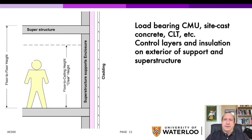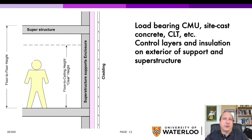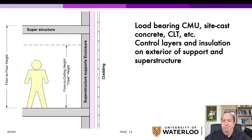If we look at a load-bearing masonry, site-cast concrete, or CLT solid wall support structure like a shear wall, we would put the control layers and exterior finish to the outdoors of that. From the point of view of the interaction with the superstructure, it is the superstructure — we've combined the floors bearing on those types of walls to perform a load-bearing superstructure combined with enclosure.